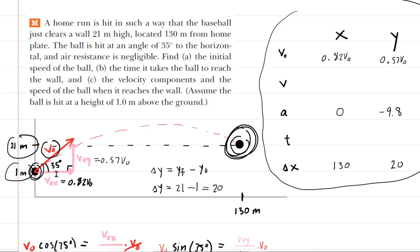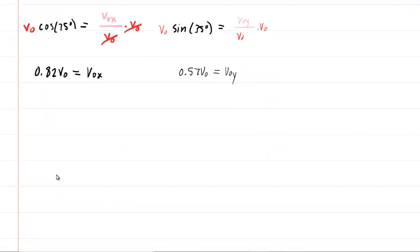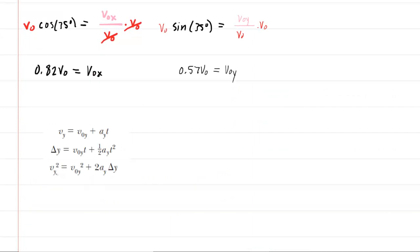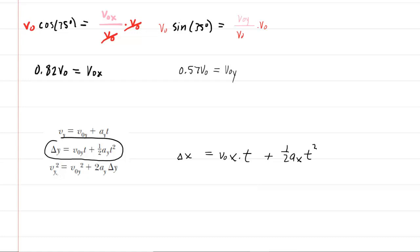With all known values in the table, we pick an equation to solve for unknown quantities. We'll use the kinematic equation written in the x-direction: delta-x equals V-initial-x times t plus one-half times acceleration-x times t-squared. Substituting the known values: 130 equals 0.82 V-naught times t, plus one-half times zero times t-squared. The acceleration term zeros out, giving us an expression for time.